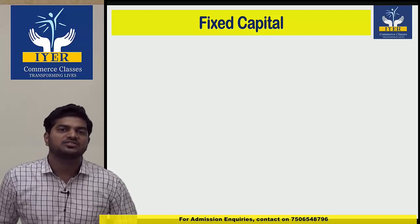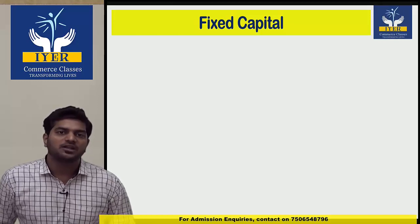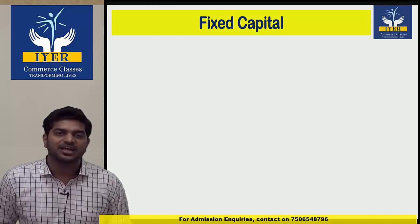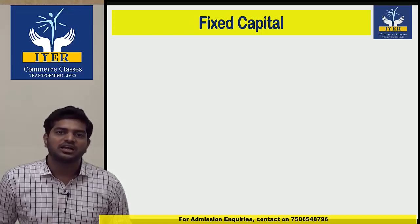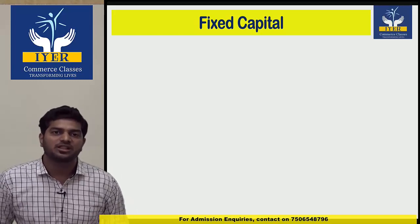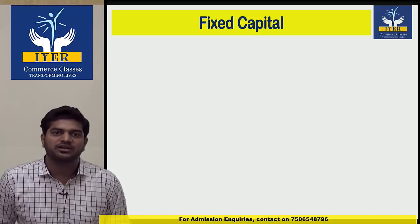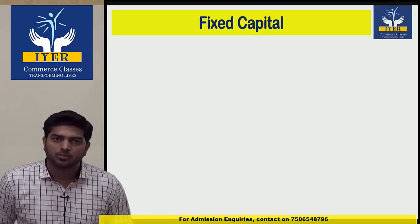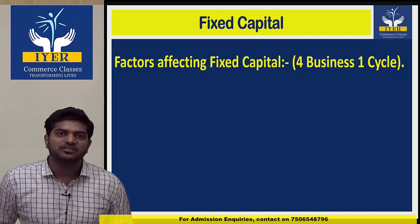Next topic is fixed capital. Capital that lasts a long time in business is fixed capital — it is permanent, lasting more than 5, 10, 20 years. Fixed capital means investment in fixed assets like land and building, plant and machinery, tools and equipment, etc. For factors affecting fixed capital, the code is '4 business and 1 cycle': size of business, nature of business, stages of business, growth of business, and business cycle.